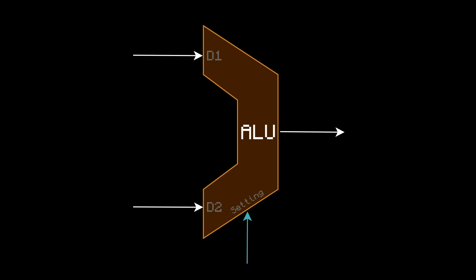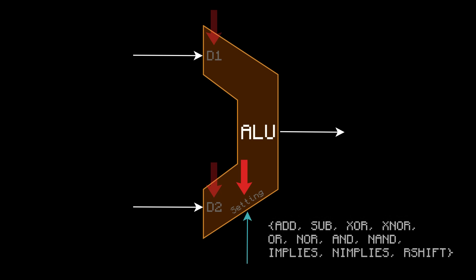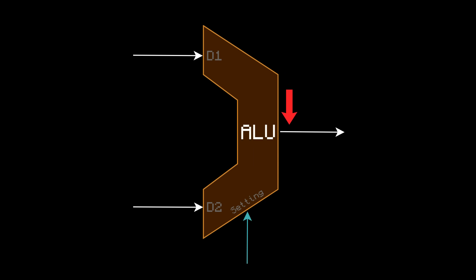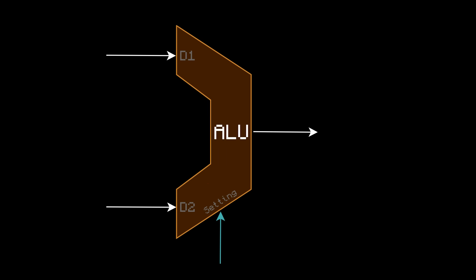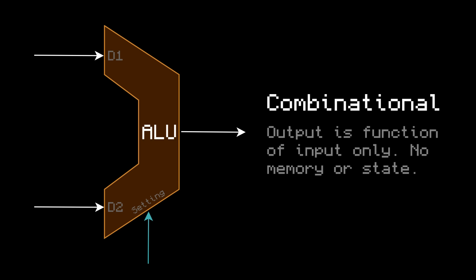All we have is the ALU. D1 and D2 are the two 8-bit inputs, which I referred to as A and B in the last episode. The setting input is one of these 11 operations that our ALU can do, and the output is the 8-bit result. Remember, this is a combinational component, because once you put in the inputs, the output is already predetermined. You could even make a truth table with every possible combination, but it would be thousands of lines long.